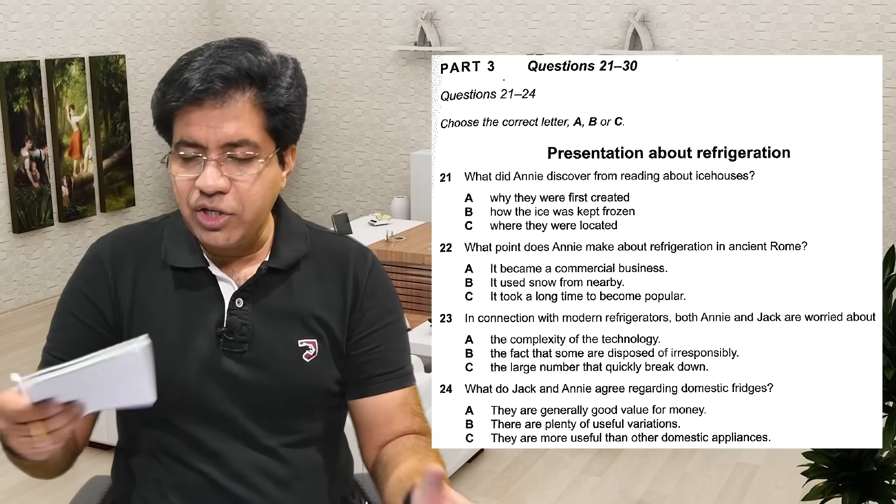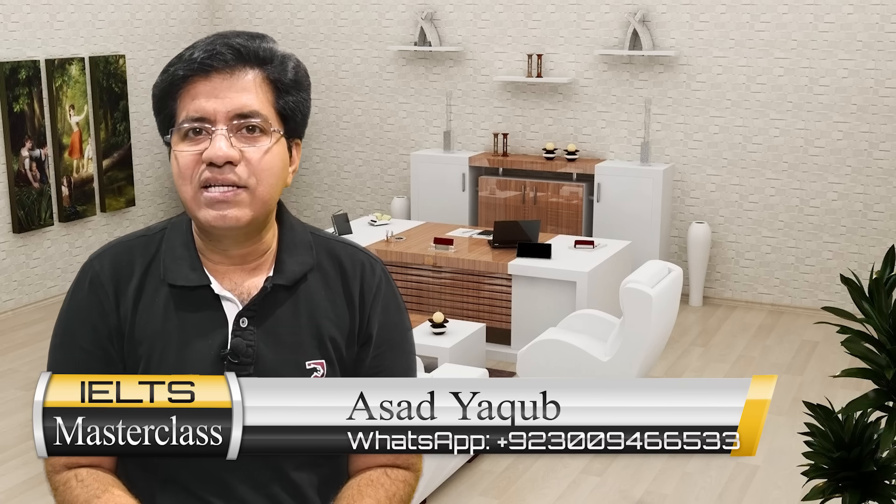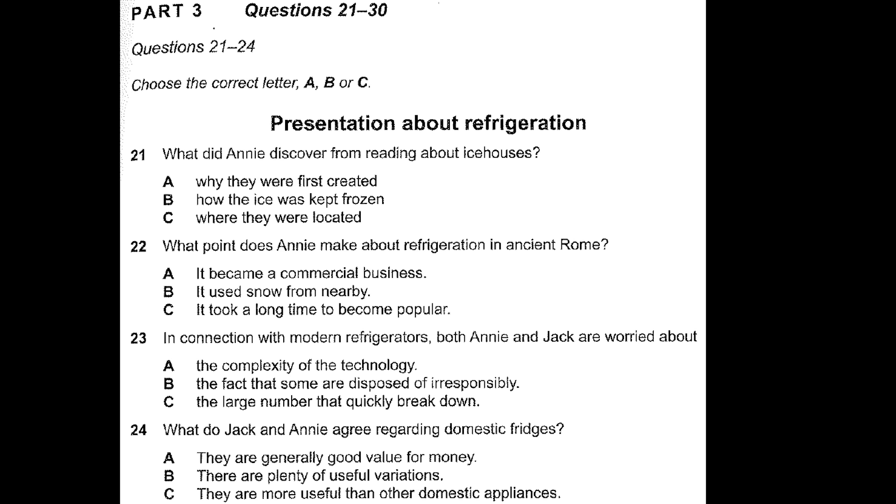Now I'll play the audio. On a notebook, write 21, 22, 23, 24, and when you listen and think option A is right for question 21, write A. At the end of the audio I'll show the answers — tell me how many you got correct out of four. Work hard to achieve your targets. Now let's start the listening test — all the best. Listen carefully and answer questions 21 to 24.